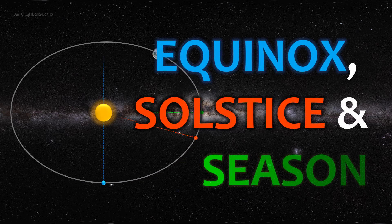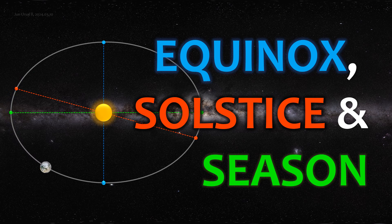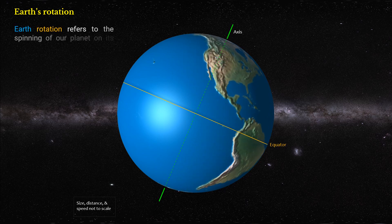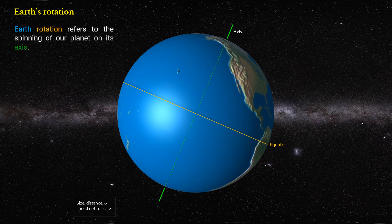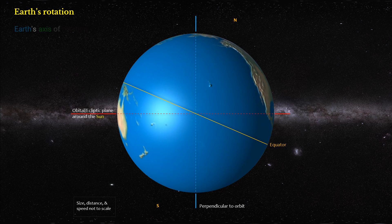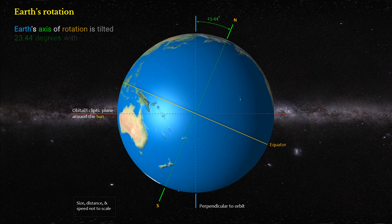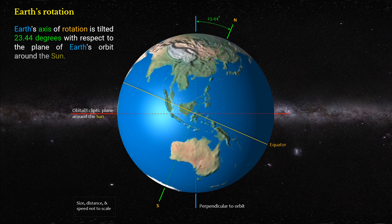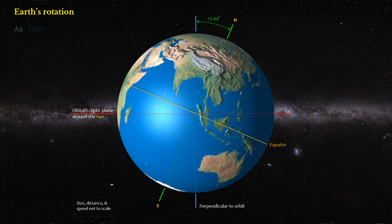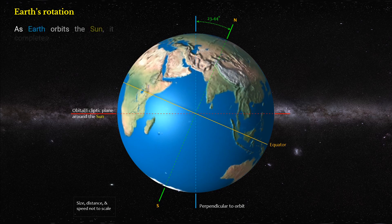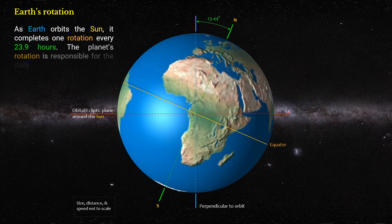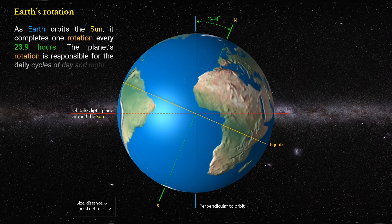Equinox, Solstice, and Season. Earth rotation refers to the spinning of our planet on its axis. Earth's axis of rotation is tilted 23.44 degrees with respect to the plane of Earth's orbit around the Sun. As Earth orbits the Sun, it completes one rotation every 23.9 hours. The planet's rotation is responsible for the daily cycles of day and night.